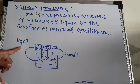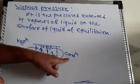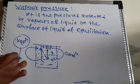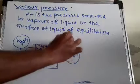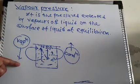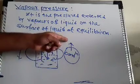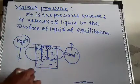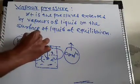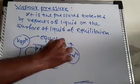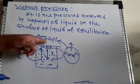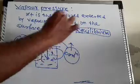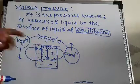Initially, the rate of vaporization is high and the rate of condensation is low. As time passes, the rate of vaporization decreases and the rate of condensation increases until the rate of vaporization equals the rate of condensation, and the system reaches equilibrium.